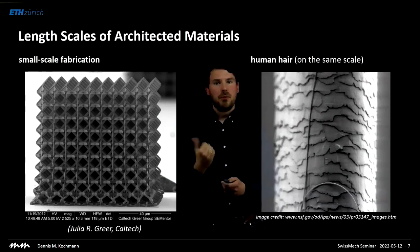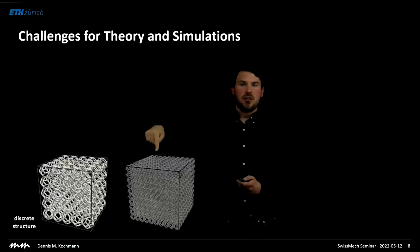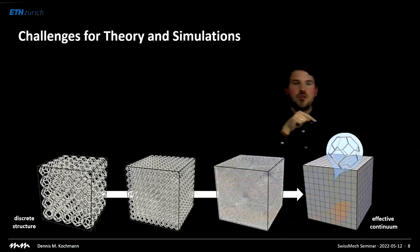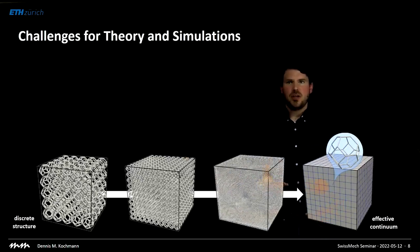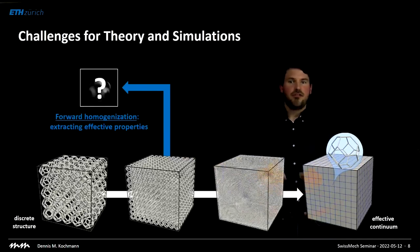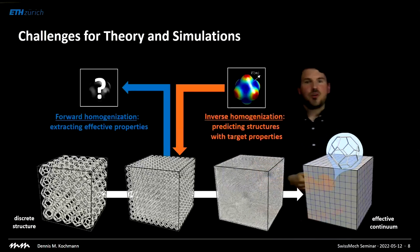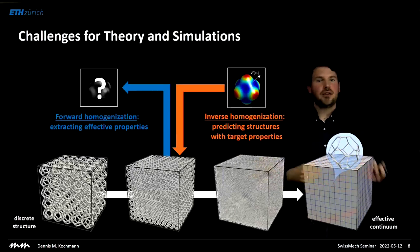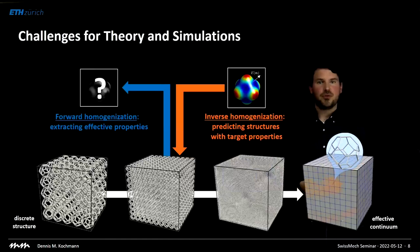If you make the unit cells smaller and smaller, you approach an effective continuum whose properties depend on the architecture but whose structural features are no longer visible. This leads to two key questions for modelers and theoreticians: first, how do we extract effective properties from a known architecture — what I refer to as forward homogenization — and second, if you hand me any desired material properties, how can we find an architecture with exactly those target properties — what I refer to as inverse homogenization. The latter is a big challenge for theory and simulations.